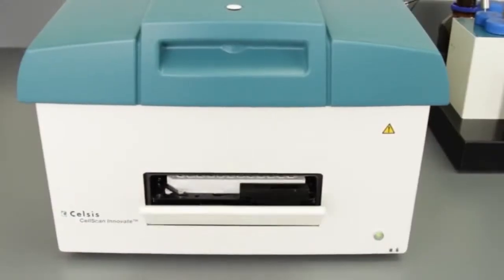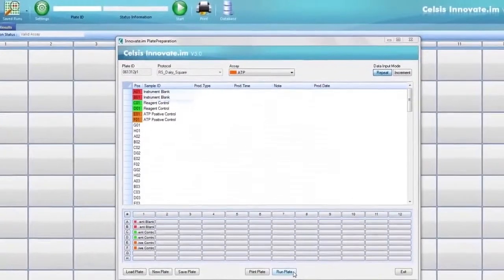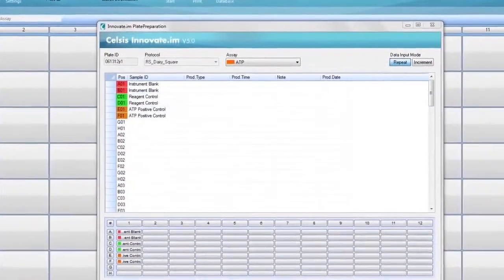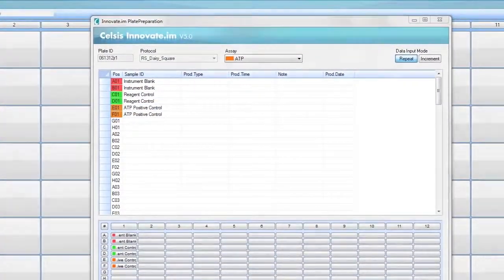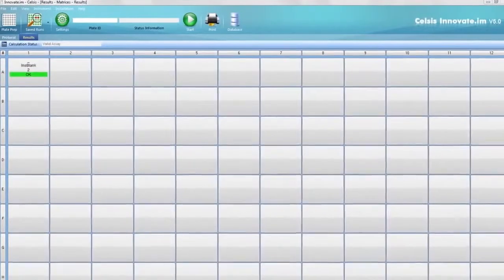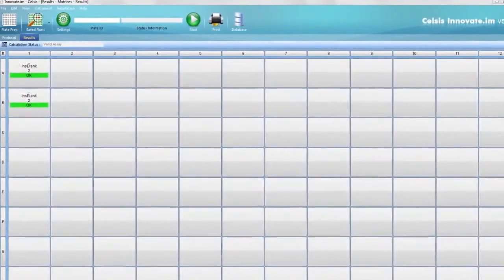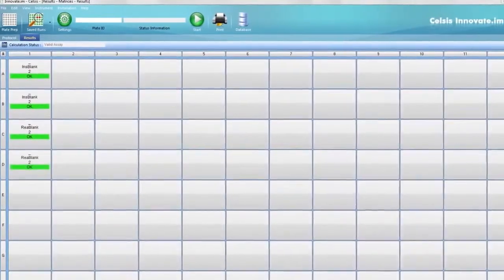Good lab practices include running daily controls for an instrument blank, reagent control, and an ATP-positive control. To ensure that the instrument and reagents are working properly, always verify that the controls pass before testing your samples.